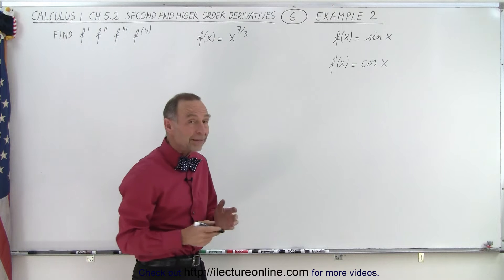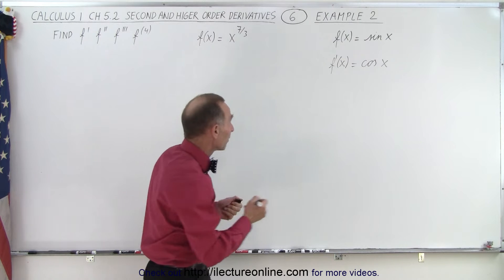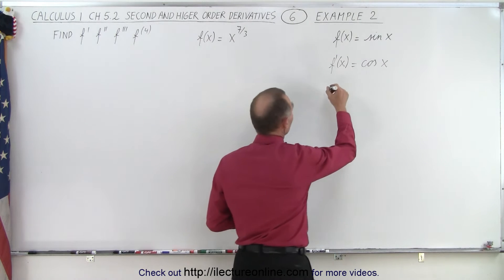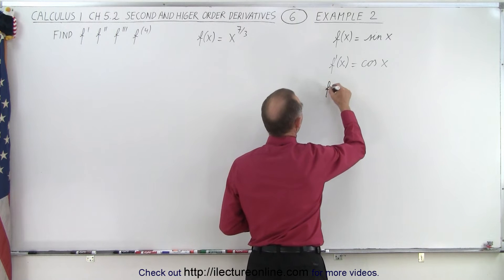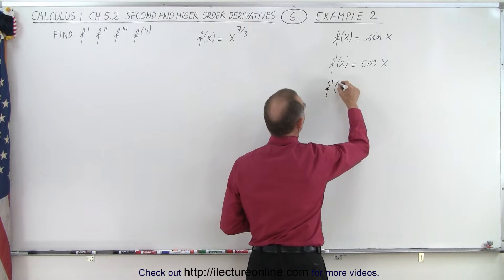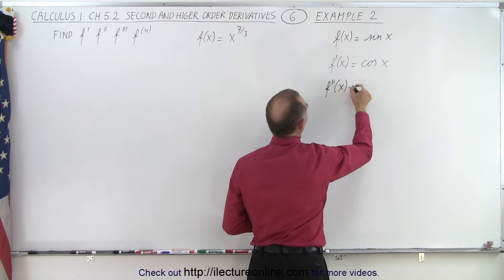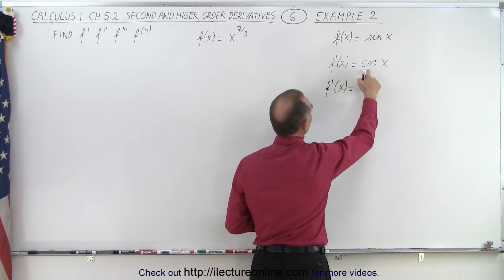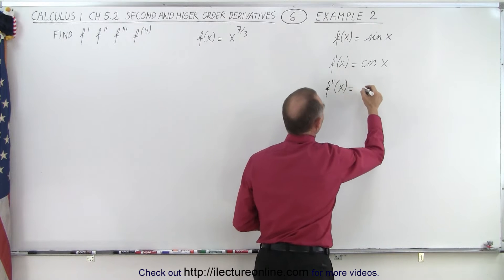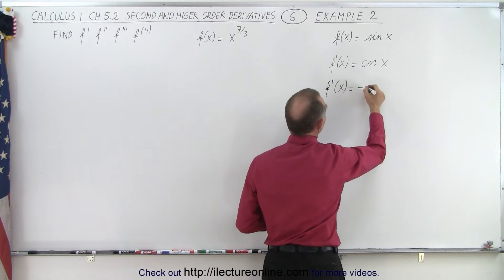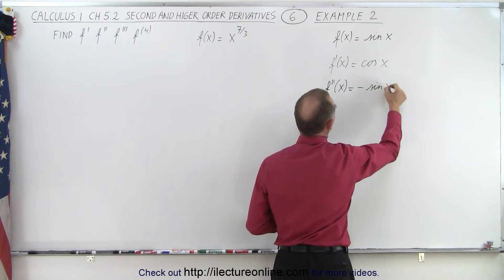If I now take the second derivative, f double prime of x, the derivative of the cosine is the negative sine, so I get negative sine of x.